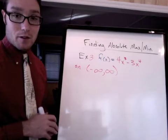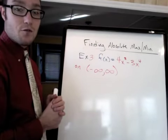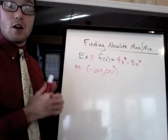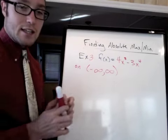So here's the third example. I want to find the maxes and mins of 4x cubed minus 3x to the fourth on negative infinity to infinity. All real numbers. So there's no endpoints. I have to do something a little tricky at the end. I'll show you.